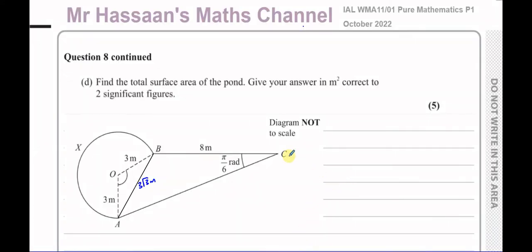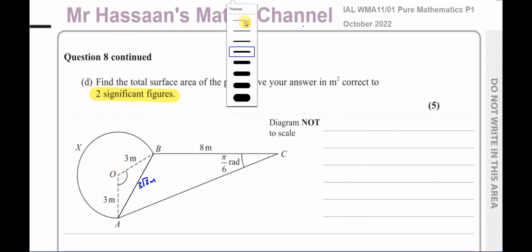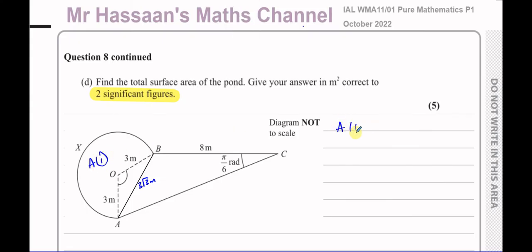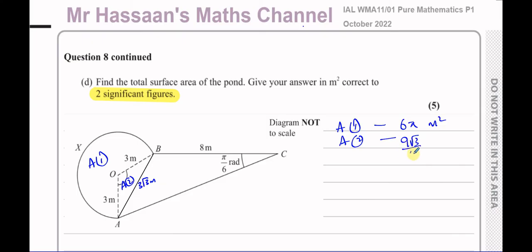For part D, we need to find the total surface area of the pond, giving the answer in metres squared correct to two significant figures. We've already found: Area 1 (sector) = 6π m², and Area 2 (triangle AOB) = 9√3/4 m². What remains is to find the area of the third section — the triangle in the quadrilateral.